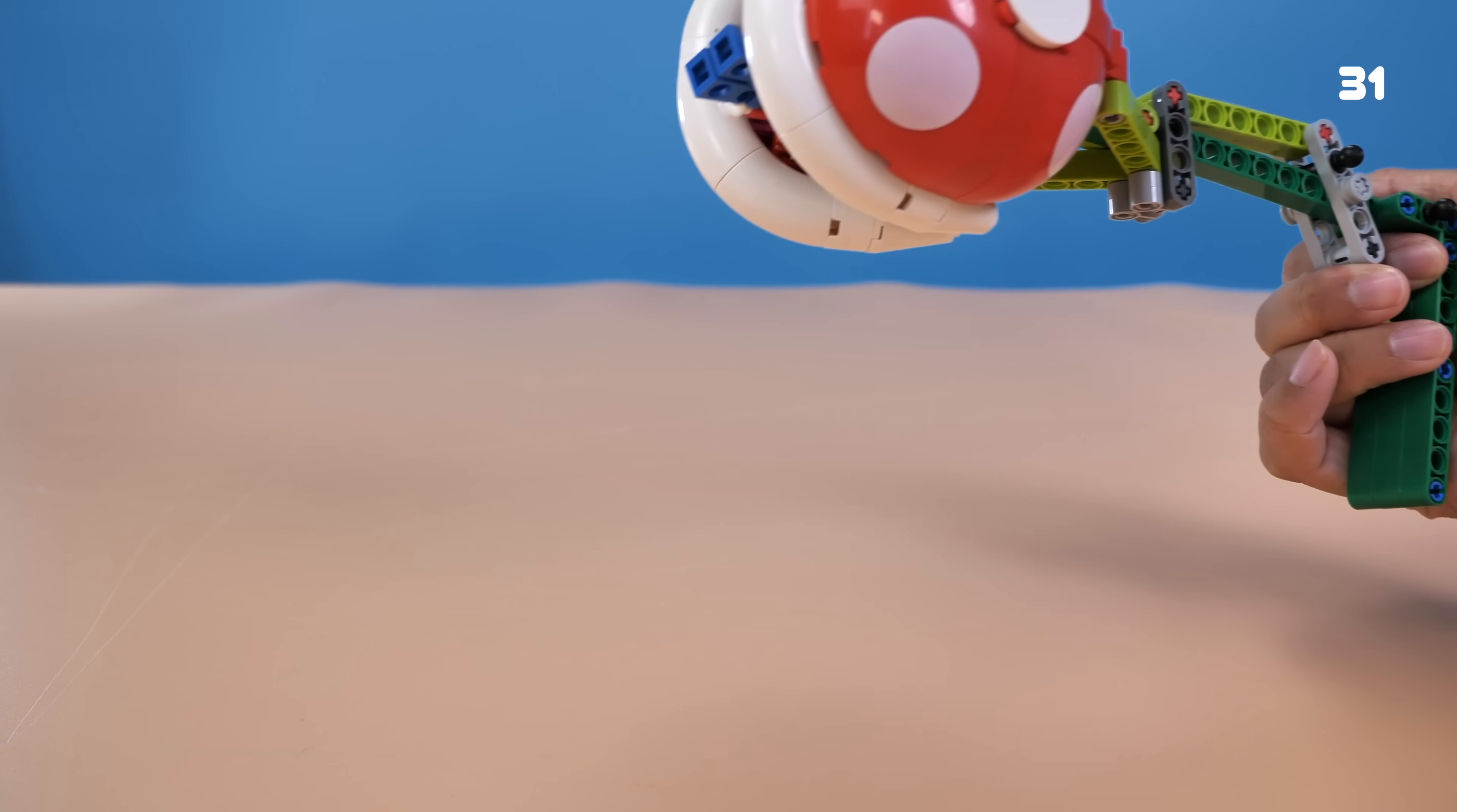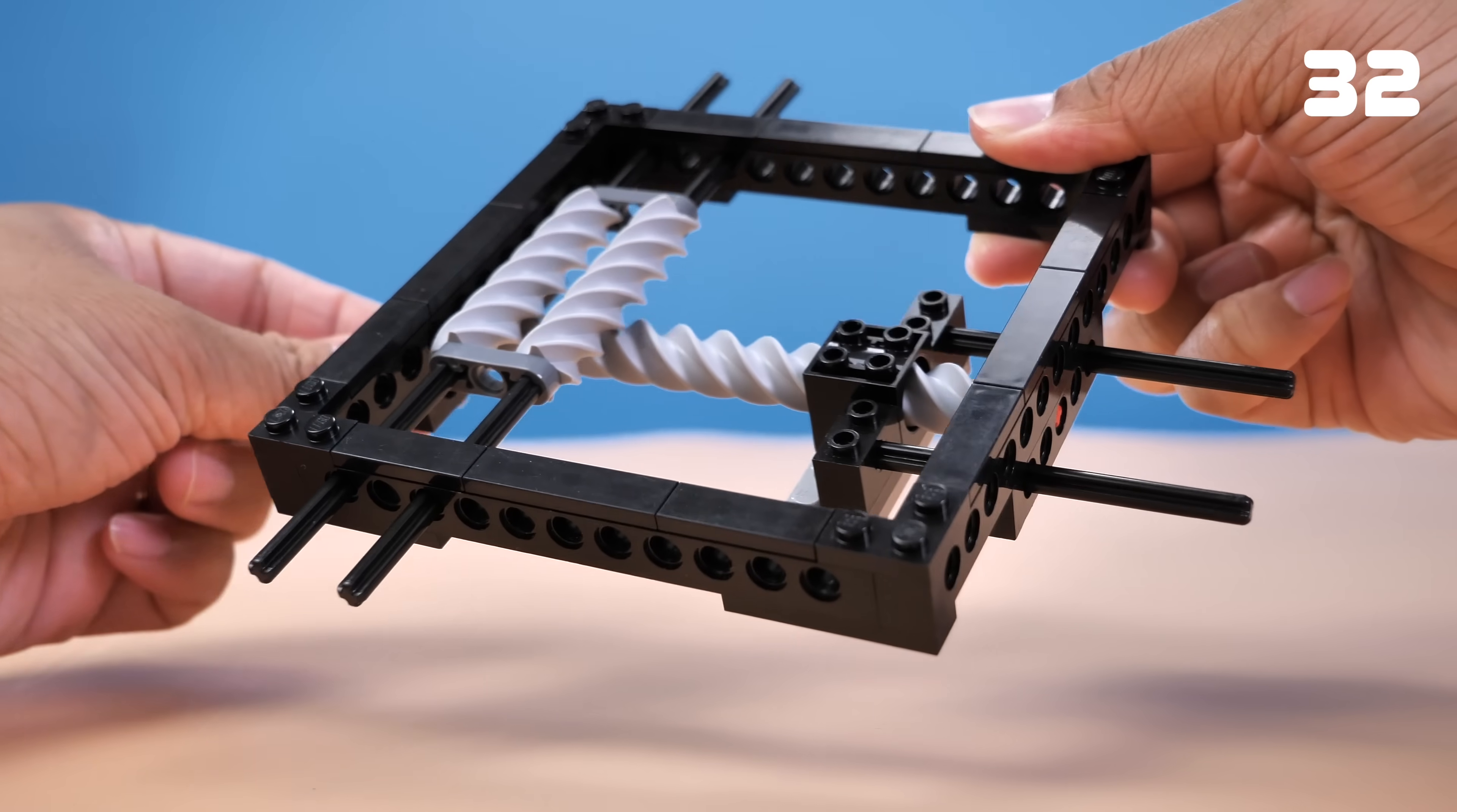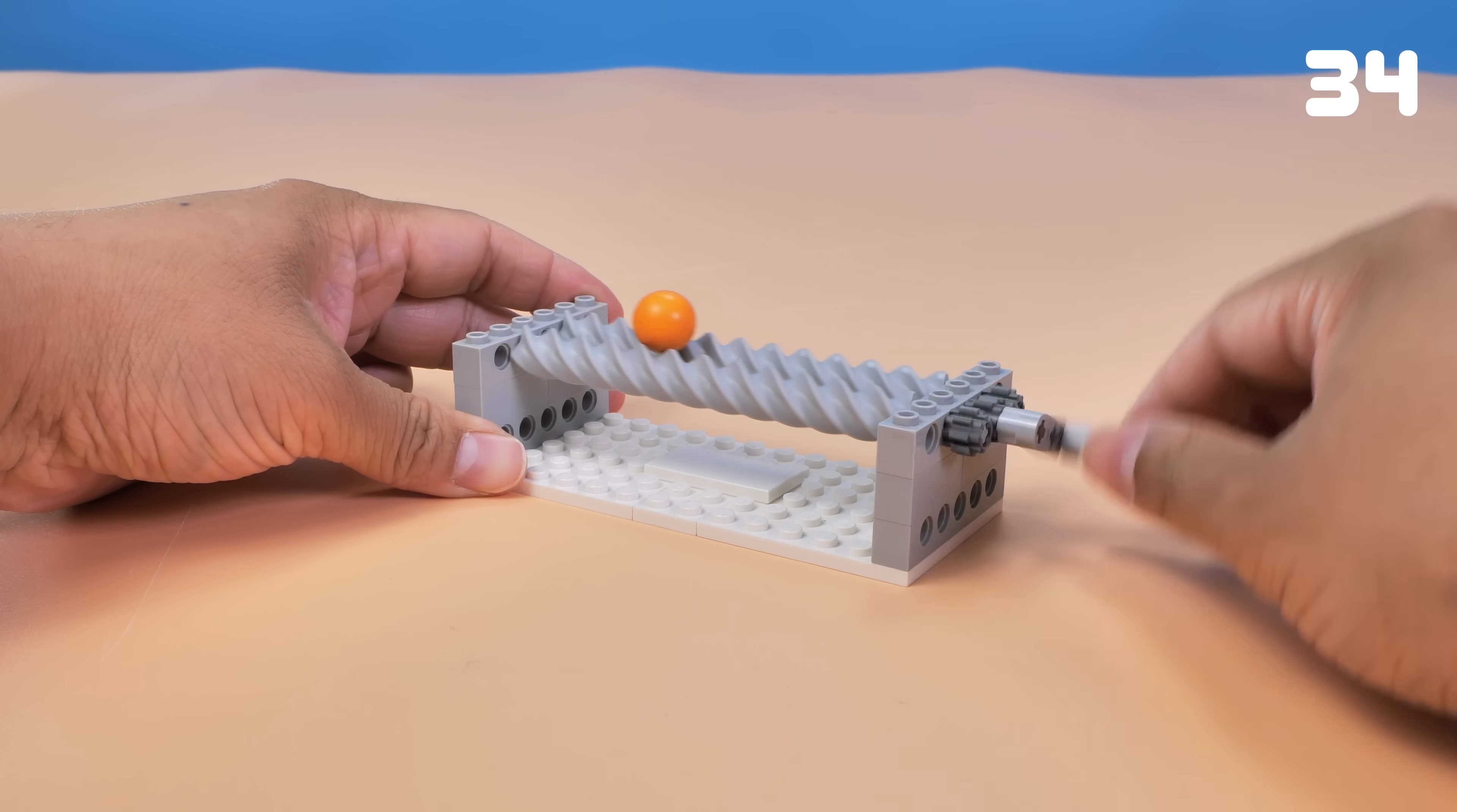Next, we could make use of these new worm gear parts. Place them 90 degrees and spin smoothly, or use them as a conveyor belt. A LEGO ball would be a perfect match.